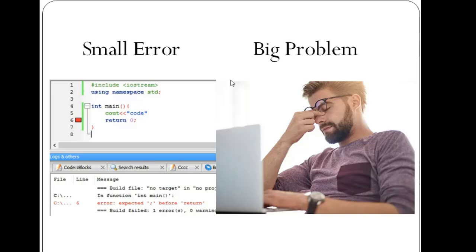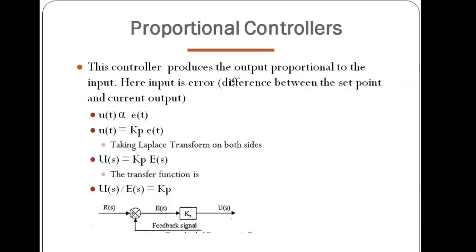The ultimate aim is amplifying and magnifying the error — proportional to the input, proportional to the error. If the error is very minimum, you may take a very minimum proportional control action. If the error is maximum, there should be heavy control action proportional to the error. This controller produces output in proportion to the input.